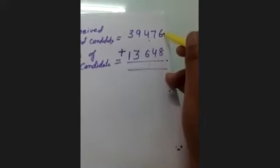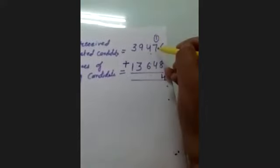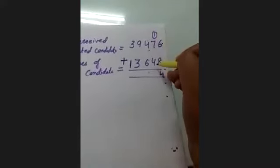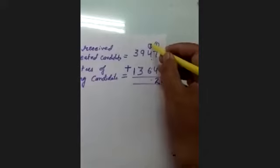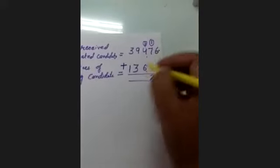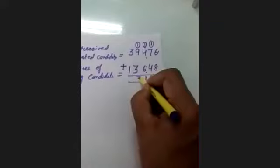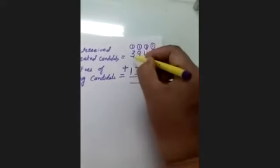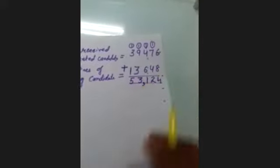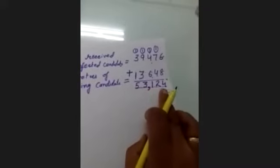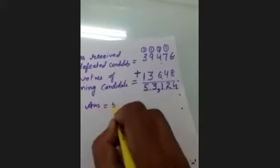Adding: 8 plus 6 is 14, write 4 carry 1. 7 plus 1 is 8 plus 4 is 12, write 2 carry 1. 4 plus 1 is 5 plus 6 is 11, write 1 carry 1. 9 plus 1 is 10 plus 3 is 13, write 3 carry 1. 3 plus 1 is 4, then 5. Votes received by winning candidate: 53,124.